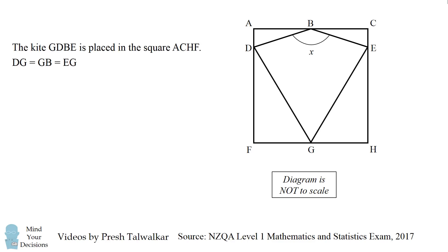The kite GDPE is placed in the square ACHF. DG is equal to GB is equal to EG. Calculate the size X of angle DBE. Justify your answer with clear geometric reasoning.